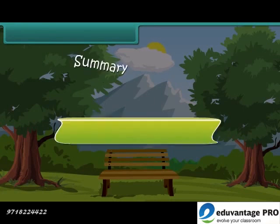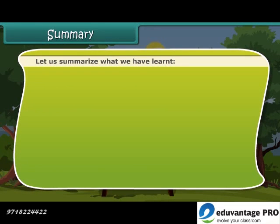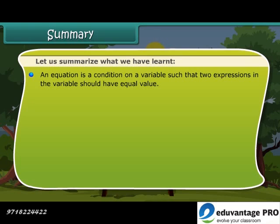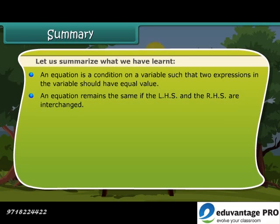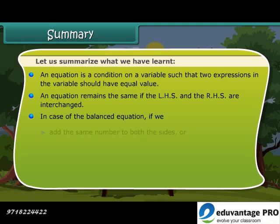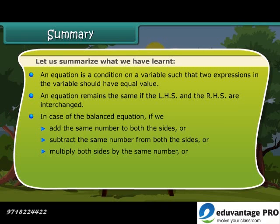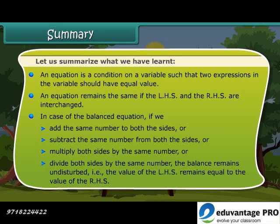Summary. Let us summarize what we have learned. An equation is a condition on a variable such that two expressions in the variable should have equal value. An equation remains the same if the LHS and RHS are interchanged. In case of a balanced equation, if we add, subtract, multiply, or divide both sides by the same number, the balance remains undisturbed. That is, the value of the LHS remains equal to the value of the RHS.